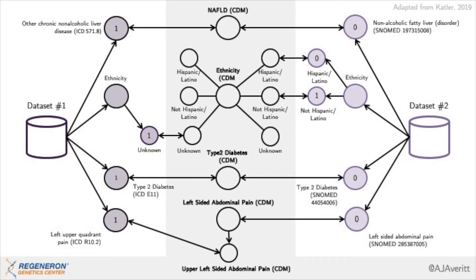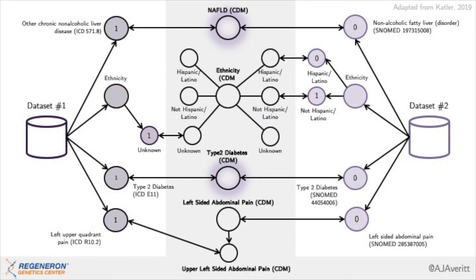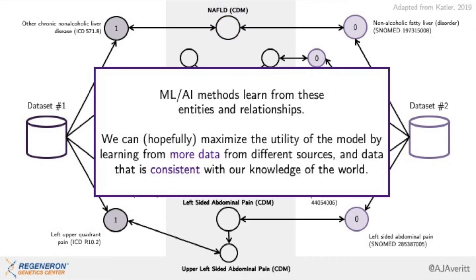A CDM would ingest these disparate features and map them into a unified knowledge representation, shown in the gray panel in the center. Through this process, we would rectify those data complexities. Of note, this CDM could tell us that left-sided abdominal pain is a parent of upper left-sided abdominal pain — it captures that relationship, and a model we build could now exploit it. It also aggregates across varying forms of ethnicities to present a unified set, and maps consistent concepts of varying source vocabularies into single concepts. Machine learning methods learn from these entities and relationships, and we can maximize the utility of the model by learning from more data from different sources that is consistent with our knowledge of the world.